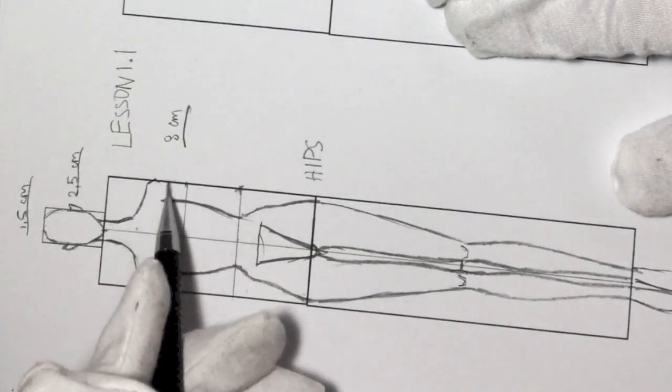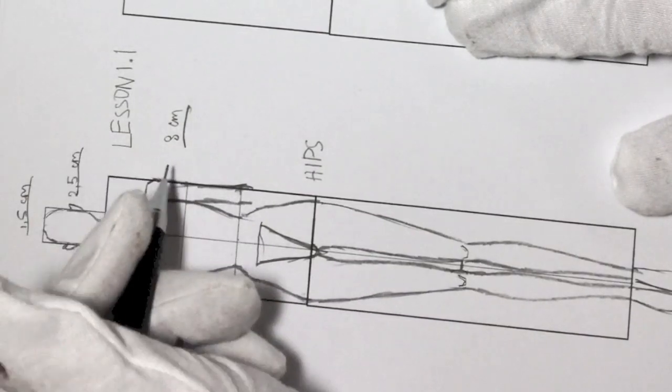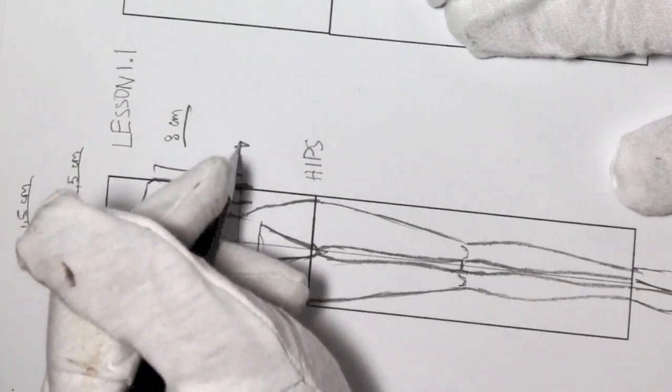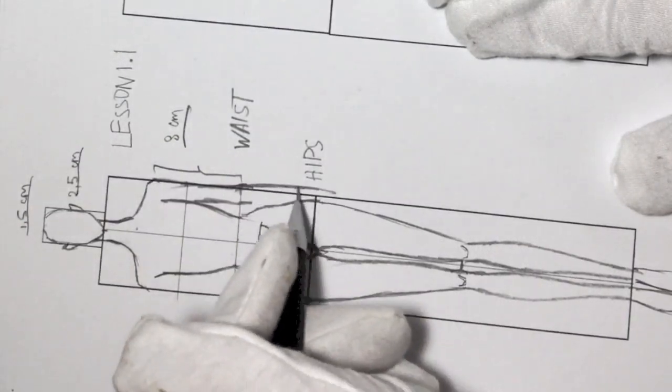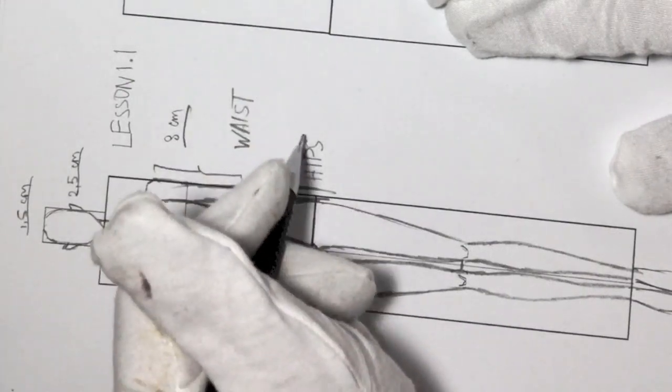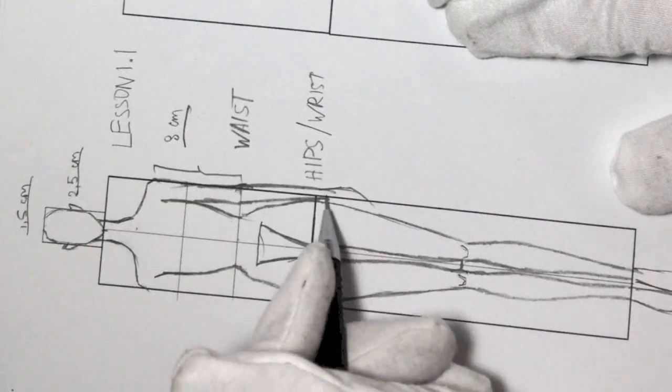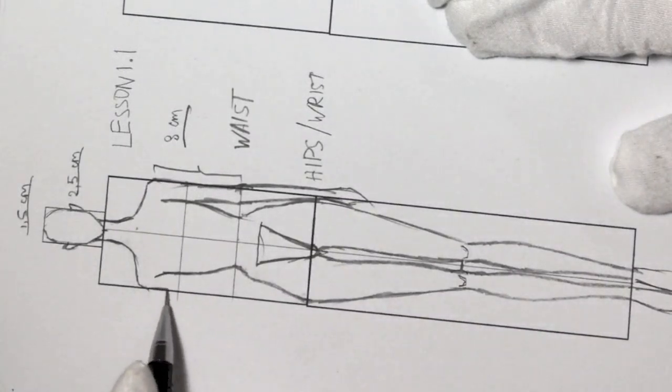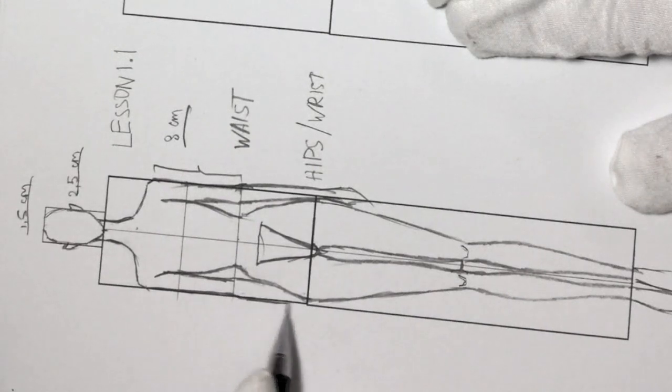Okay, so now I'm drawing the arms. And here you should remember that elbow is at the same line as waist. So like half of the arm is at the waistline. The other half finishes, like wrist line is at the same line as hips. And then you add hands.